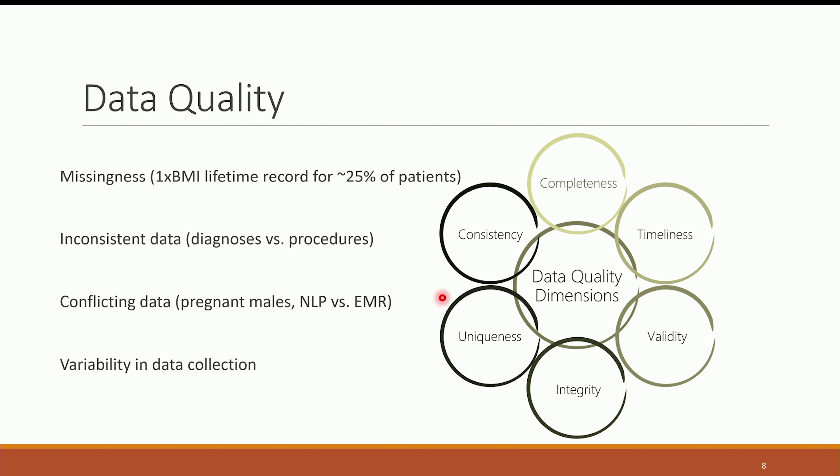Conflicting data: pregnant males and NLP versus EMR. If you go to any publicly available RWE system right now and try to find males who were pregnant, you will find at least a couple dozen cases. One issue is how we record the data — while diagnoses and procedures have longitudinal structure showing when events happened, sex does not. We followed one specific case and found a female patient who had a C-section and then had a sex change. The data is correct; how you interpret it depends entirely on the type of project.